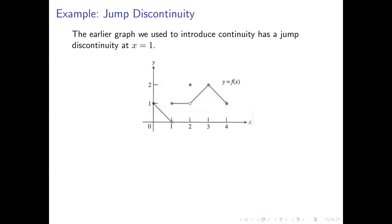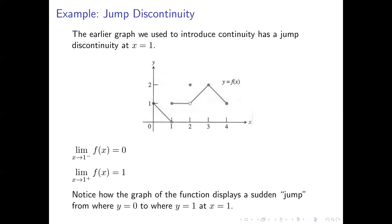Here's an example. This function has a jump discontinuity at x equals 1. Notice that the limit as x approaches 1 from the left is 0, but the limit as x approaches 1 from the right is 1, so those two limits disagree. You can see this in the graph: as we move from left to right, our y-coordinate gets closer and closer to 0 as we approach x equals 1, but then all of a sudden, once we reach x equals 1, we jump up to the point (1, 1). That sudden jump is the hallmark of a jump discontinuity.